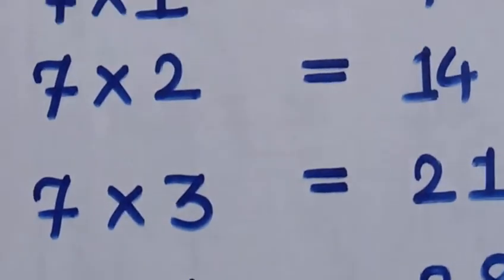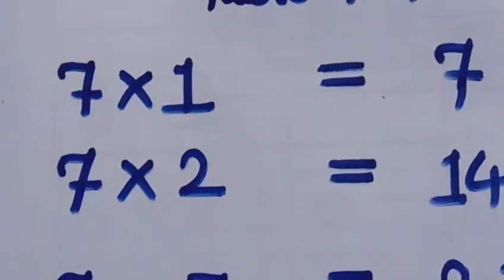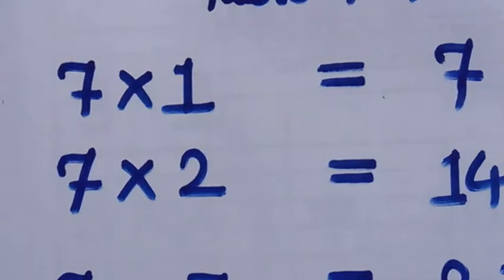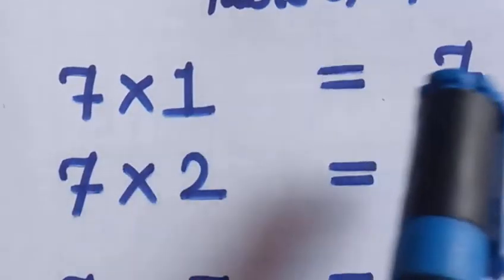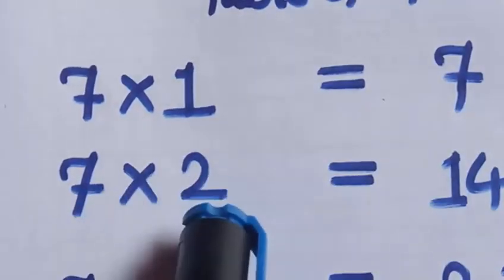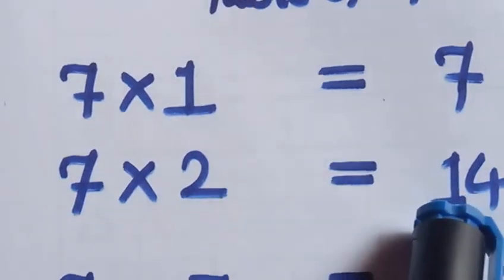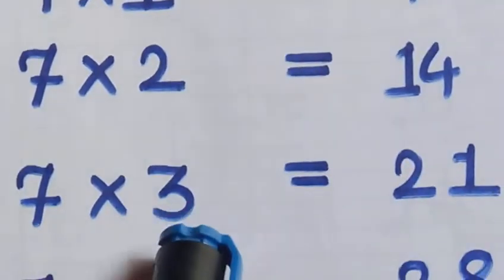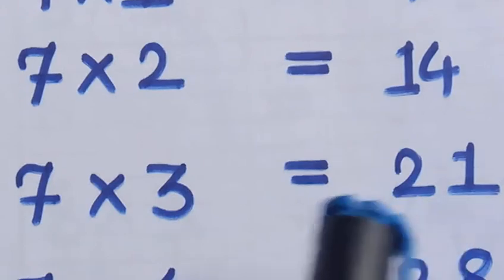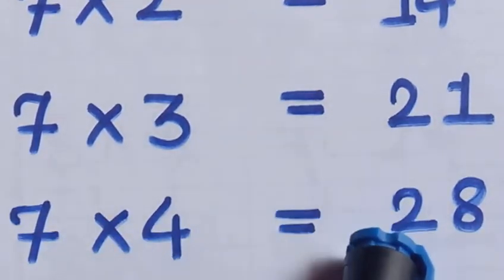Now we will practice it again. 7 1's are 7, 7 2's are 14, 7 3's are 21, 7 4's are 28.